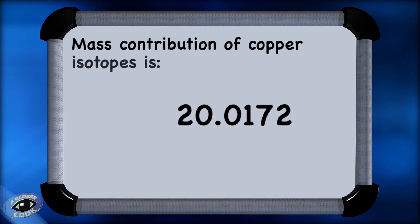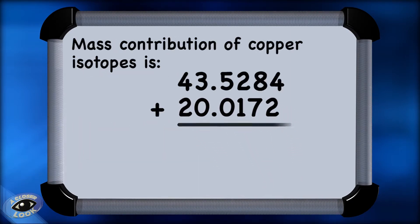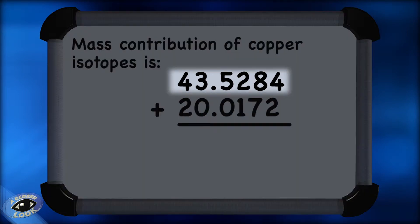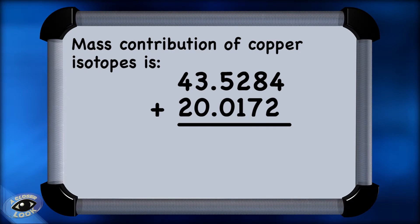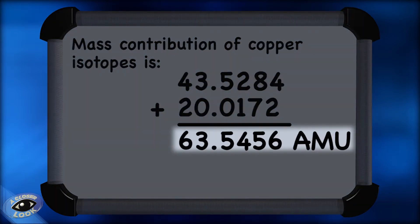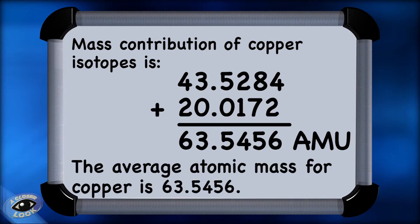At this point, we have the mass contribution from each of the two isotopes as far as the overall average atomic mass for copper. So if we add these two values together, 43.5284 plus 20.0172, we get 63.5456 AMU. And that's the average atomic mass for copper.